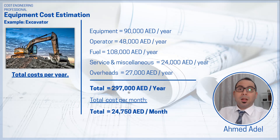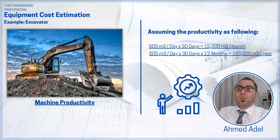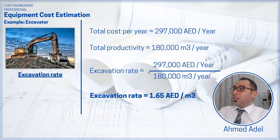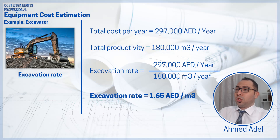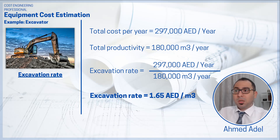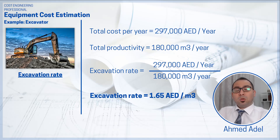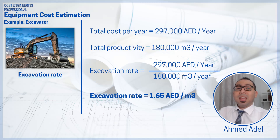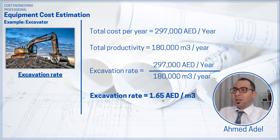The total cost per year is 297,000 dirhams and the annual productivity is 180,000 cubic meters. Dividing these gives an excavation rate of 1.65 dirhams per cubic meter. This rate covers excavation only — it does not include loading, shifting, or disposal, which would require additional equipment such as a shovel or trucks.